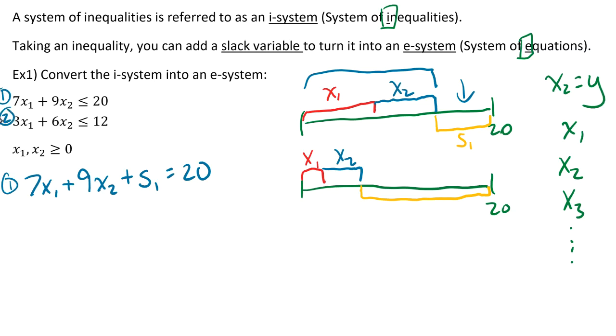For equation 2, we're going to do the same thing. 3x1 plus 6x2, except this time, the gap might not be the same, because it's a different inequality. So when we add a slack variable, we're just going to call this s2, and that equals 12. So s1 and s2 are called the slack variables, they're just filling in the gap, that way we can make it equal.